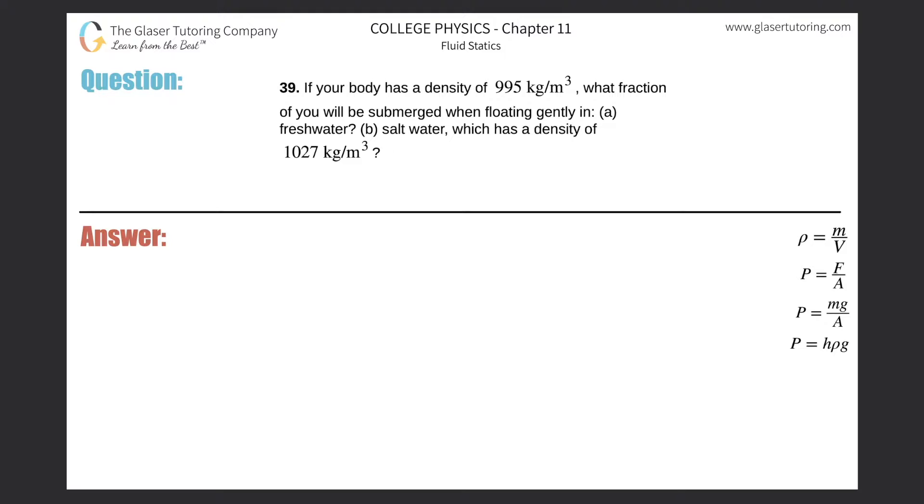Number 39: If your body has a density of 995 kilograms per cubic meter, what fraction of you will be submerged when floating gently in letter A, freshwater? In terms of where I'm going to use a formula that I derived in question number 36, please do check out that video.